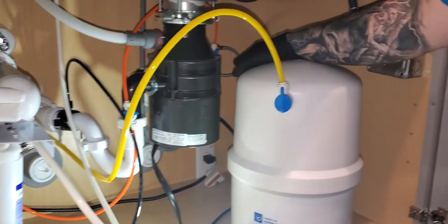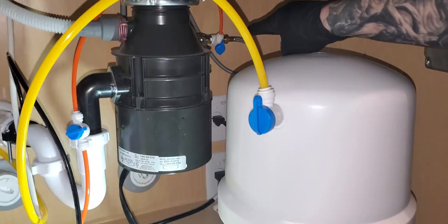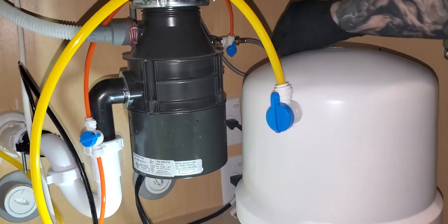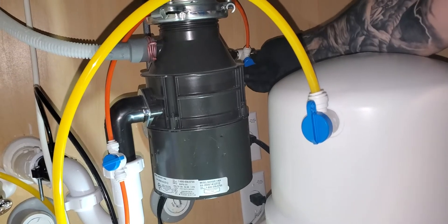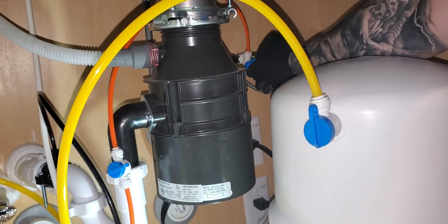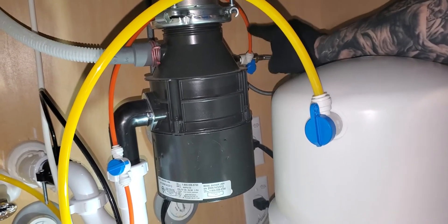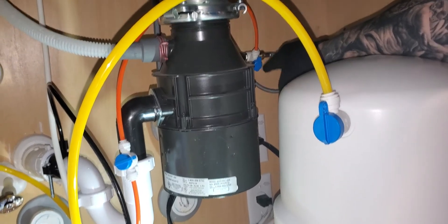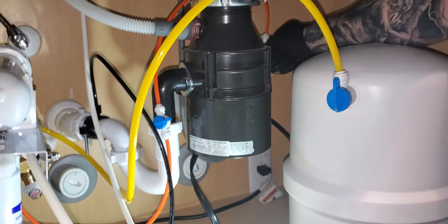The first thing you want to do is turn off the angle stop valve, which is that blue handle right there. When it's perpendicular to the tube, that is off. Parallel with the tube is always on, perpendicular is always off. Before you change the filters, you want to make sure that's off.